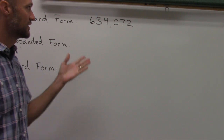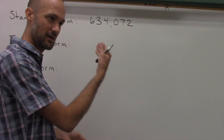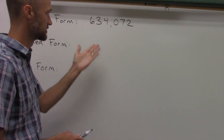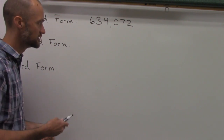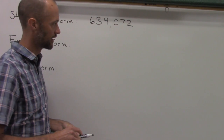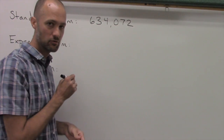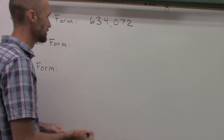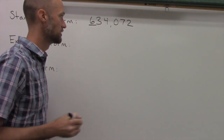Basically, Expanded Form is writing out the value of each digit and showing that you can add them together to make this number. If you don't remember how to write the value of each digit, you might want to watch the video on place value again. We start, and we need to go in order when we write it in Expanded Form, otherwise it looks confusing. So we start with the greatest place value.